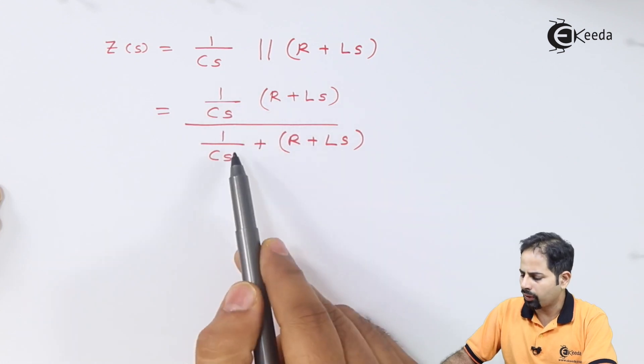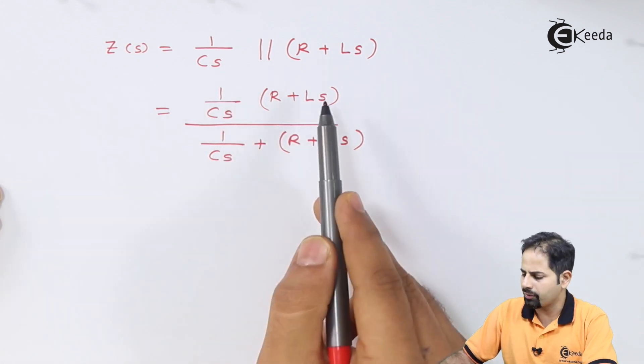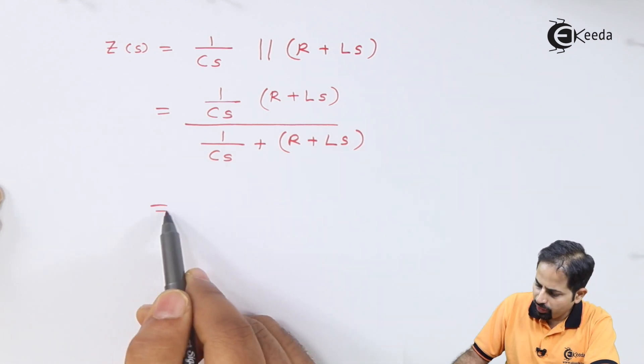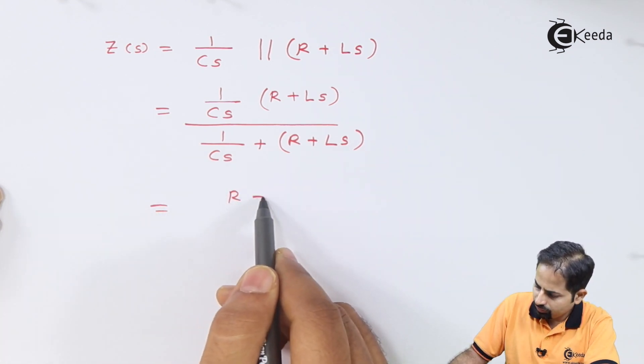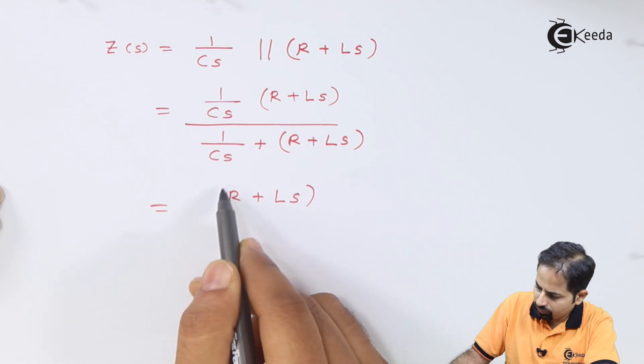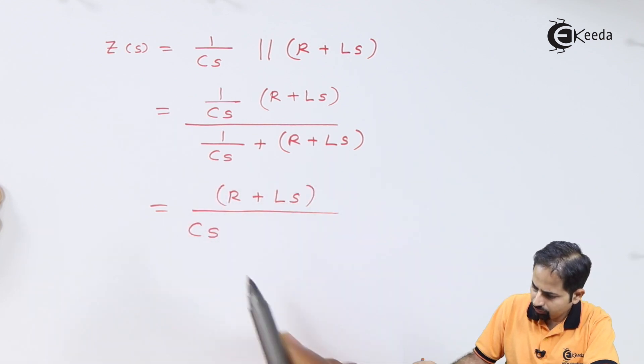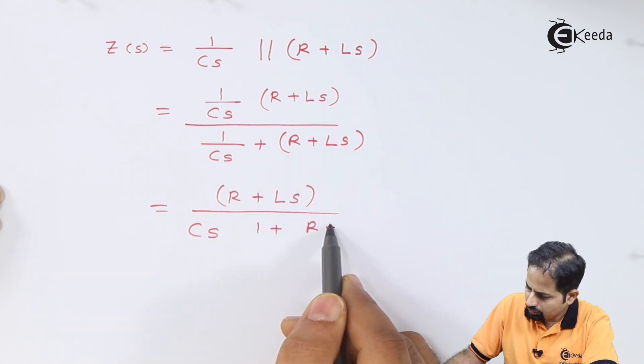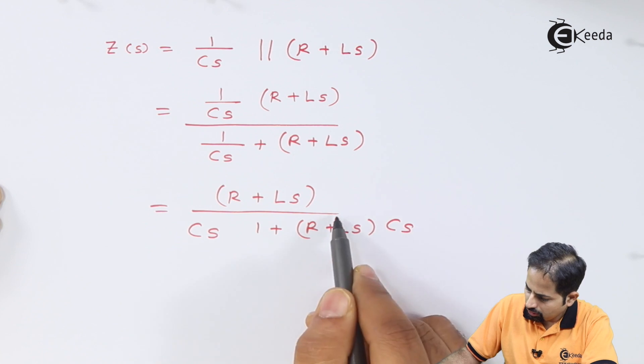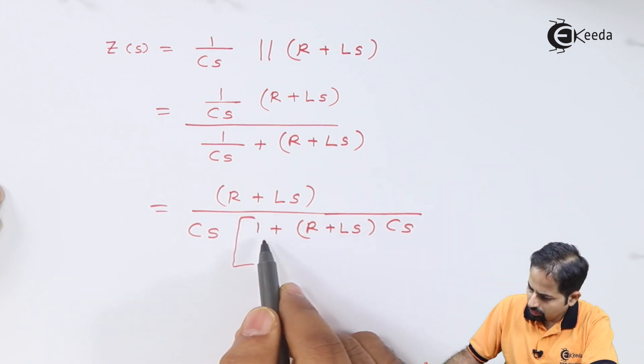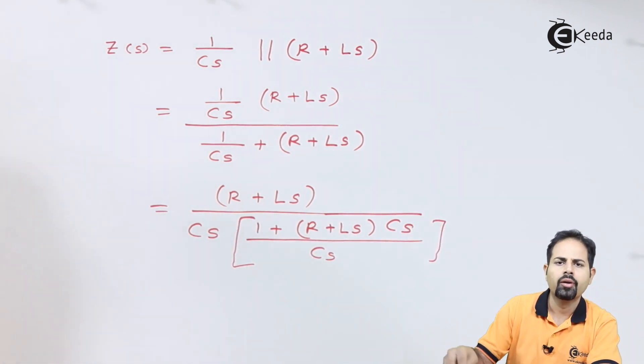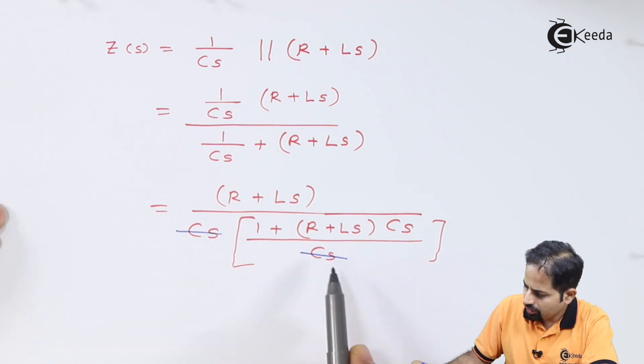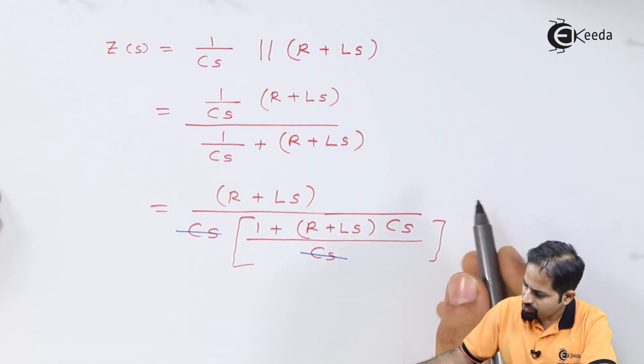It is nothing but R1 R2 upon R1 plus R2, or Z1 Z2 upon Z1 plus Z2. So we'll cross multiply here, and this Cs will get cancelled. So remaining terms will be...